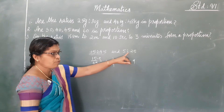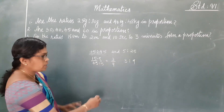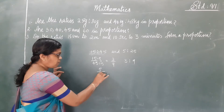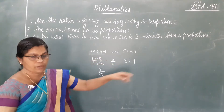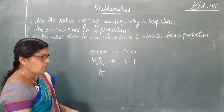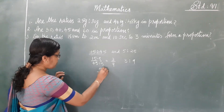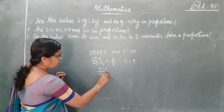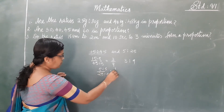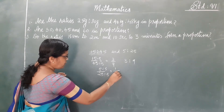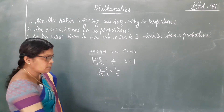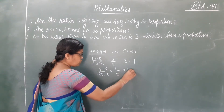Then the ratio of 5 is to 25, that is 5 divided by 25. We can divide by 5. In 5 there is only one 5, and in 25 there are five 5's. So we get 1 by 5, that is the ratio is 1 is to 5.